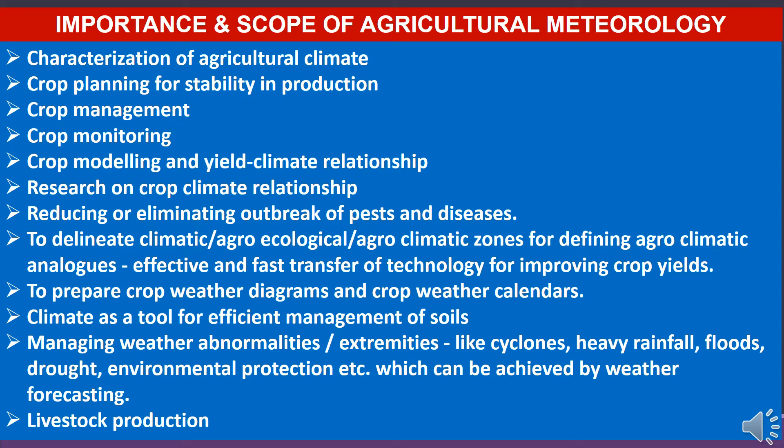Agrometeorology is also important in reducing or eliminating outbreak of pests and diseases, and to delineate agro-ecological and agro-climatic zones for defining agro-climatic analogues for effective and fast transfer of technology for improving crop yields. It is also important to prepare crop weather diagrams and crop weather calendars, and for efficient management of soils and managing weather abnormalities like cyclones, heavy rainfall, floods, drought, and environmental protection through weather forecasting. Livestock production — the favorable and unfavorable weather conditions for growth, development and production of livestock can be studied in agriculture meteorology, particularly for optimizing milk production and poultry production.